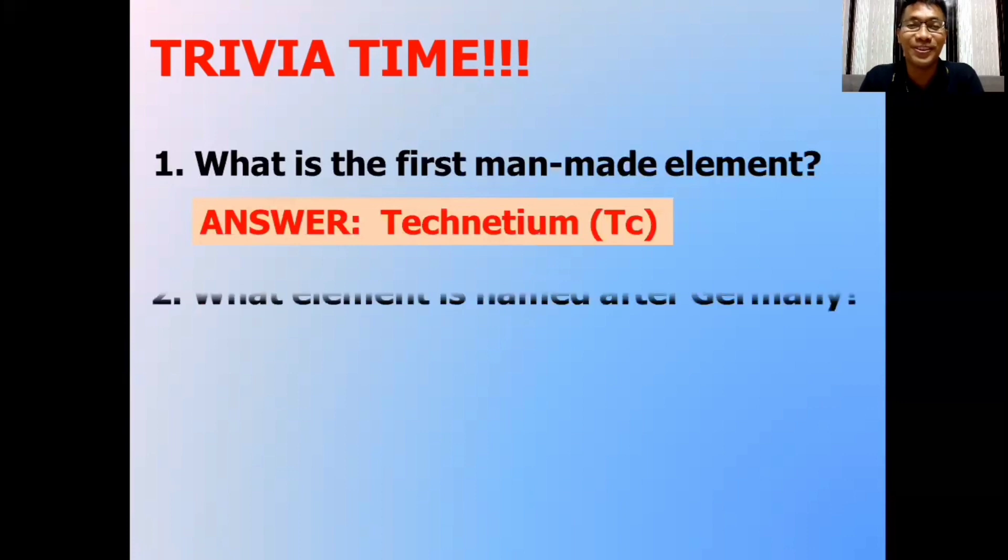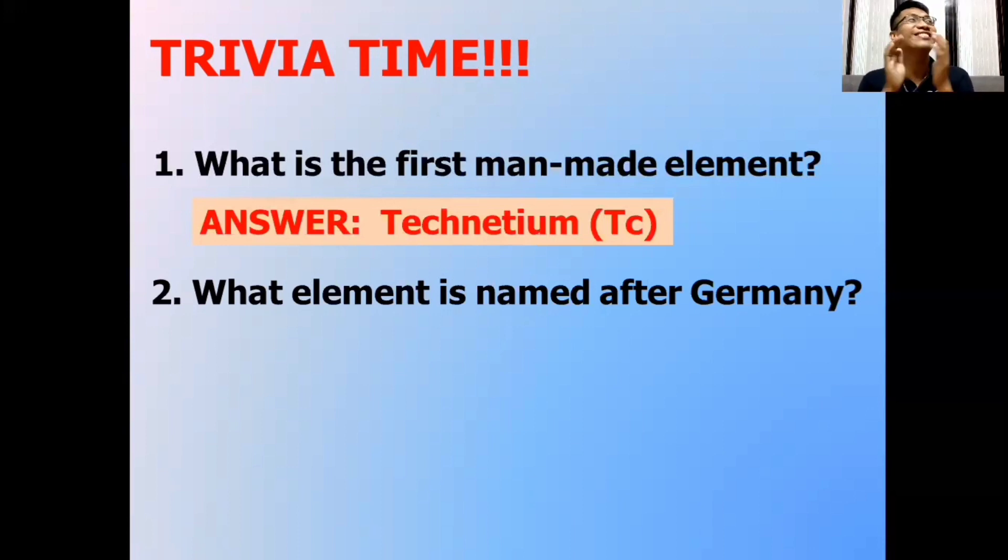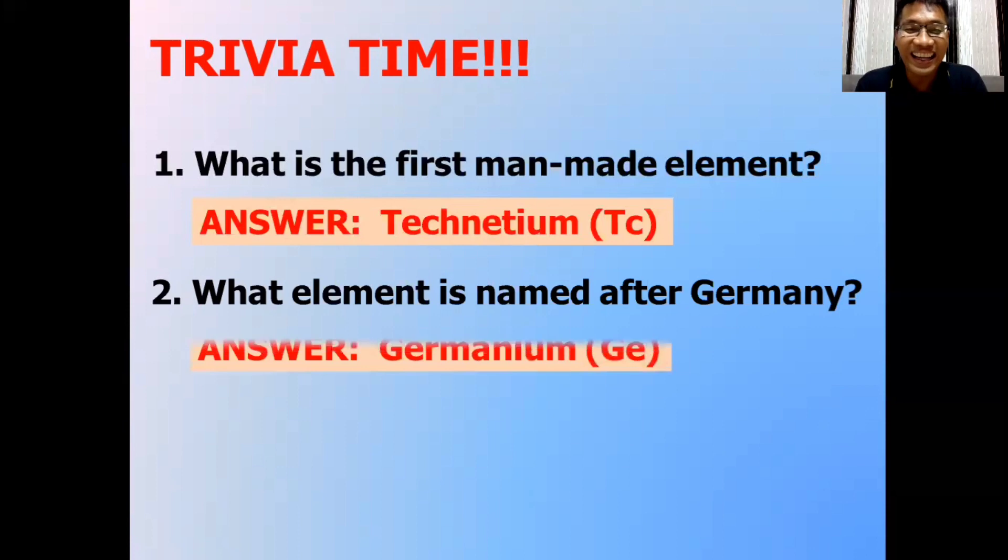Trivia question number two. What element is named after Germany? Alright! The answer is Germanium, or it has a chemical symbol of Ge. Some of the elements are named after the place where they were found, or sometimes the place where their discoverer are dwelling or living. And one of the examples of this is Germanium. The discoverer of Germanium is actually living in Germany. And so, it is named after Germany.